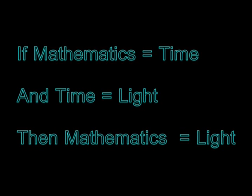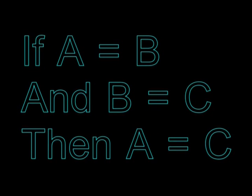This is basic logic. If A equals B and B equals C, then A must equal C. Do you understand what I am saying? Light, mathematics and time are all the same thing or at the very least they are all behaving the same way. Light is copying mathematics, so light is behaving intelligently.